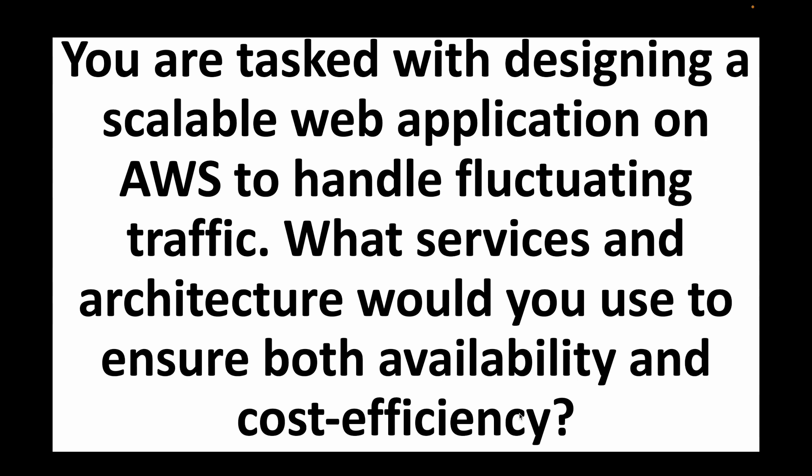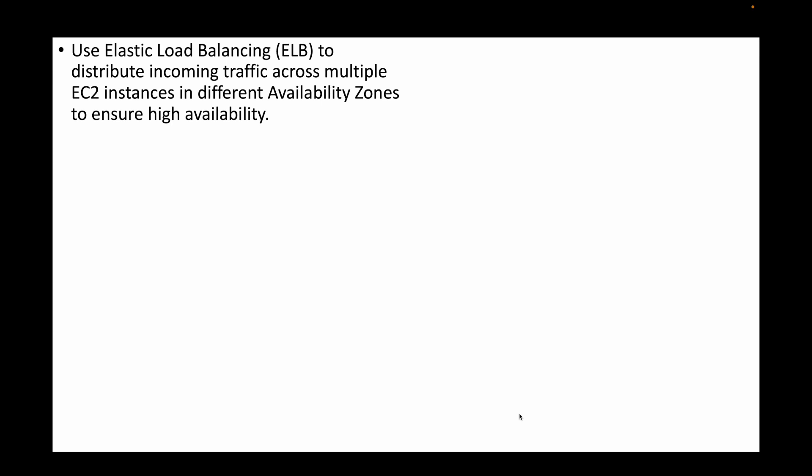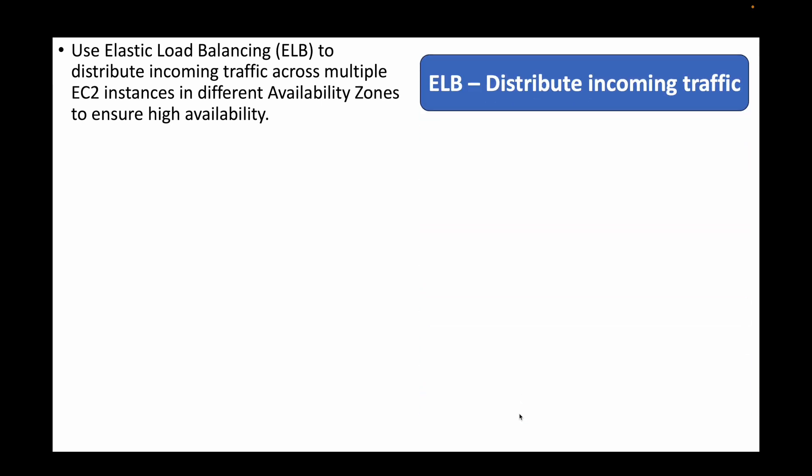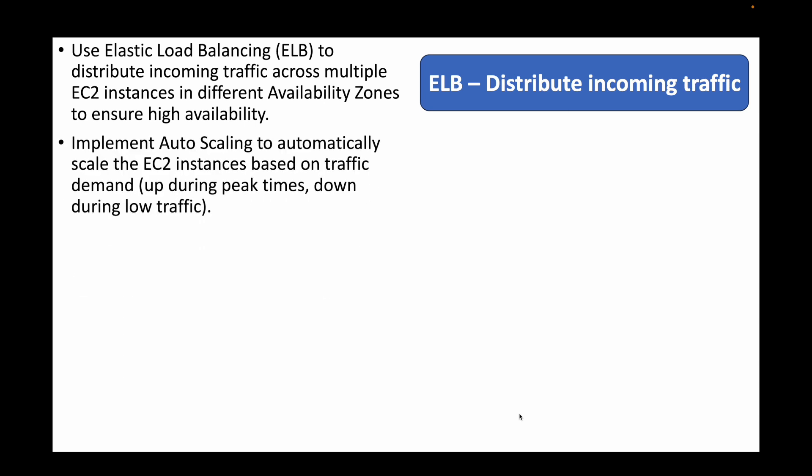The first question is: you're tasked with designing a scalable web application on AWS to handle fluctuating traffic — what services and architecture would you use to ensure both high availability and cost efficiency? For this, we can make use of Elastic Load Balancing to make the application highly available and distribute incoming traffic across multiple EC2 instances running in different availability zones.